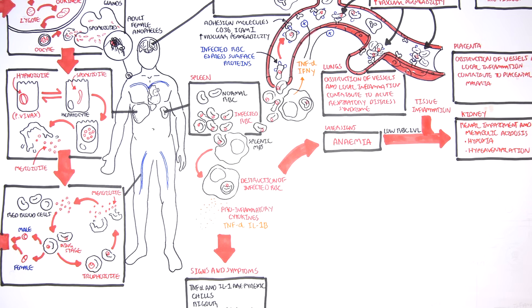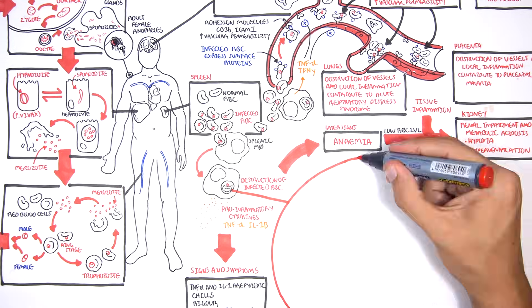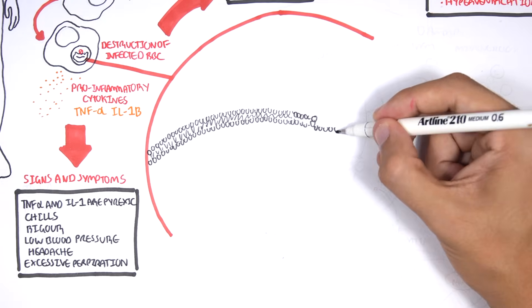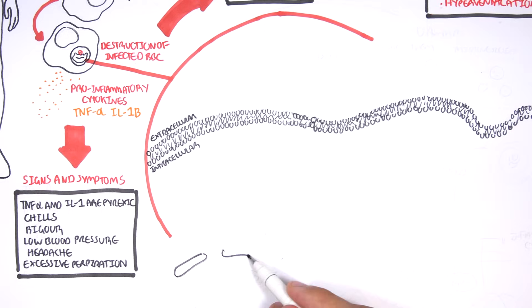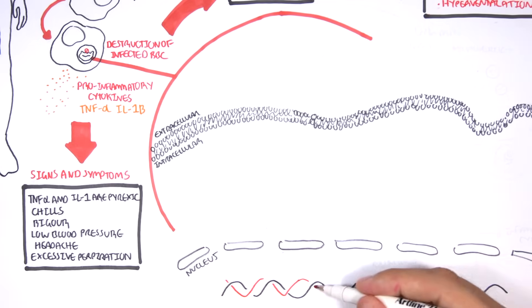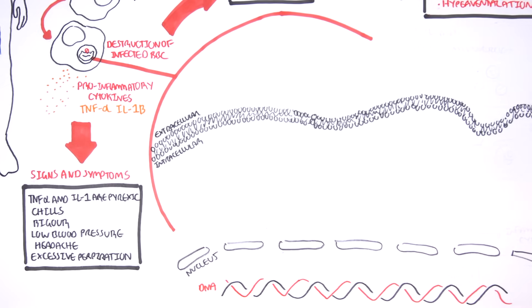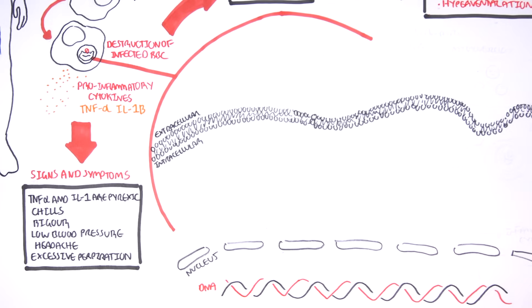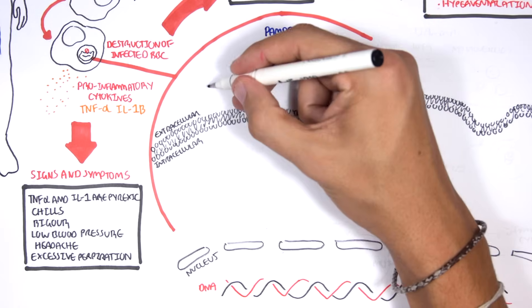Remember, the pro-inflammatory cytokines are thought to be responsible for the signs and symptoms of malaria, which is the chills, the fever, and the rigor. Let us just say here is the outer membrane of a macrophage. And here is the nucleus of the macrophage where we can find the DNA. Okay, now let me introduce things called PAMPs, which are pathogen-associated molecular patterns. And these are just structures that can be detected by immune cells.